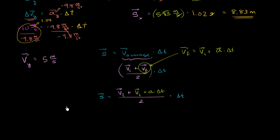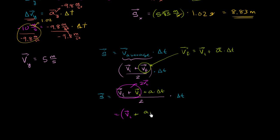This is our total displacement. We have 2 vi's, so that simplifies to 2 times our initial velocity. This expression simplifies to our initial velocity plus the acceleration times time divided by 2, and all of this is multiplied by the amount of time that passes by. This is our total displacement.